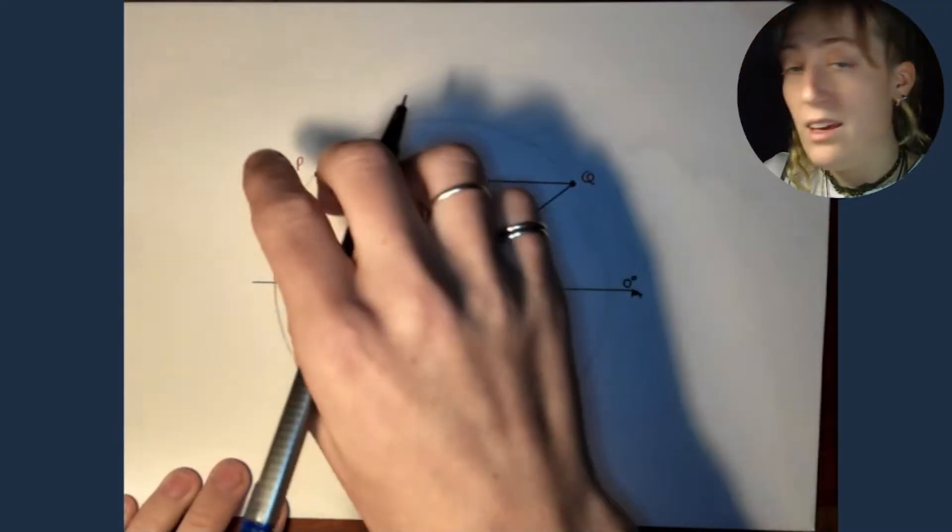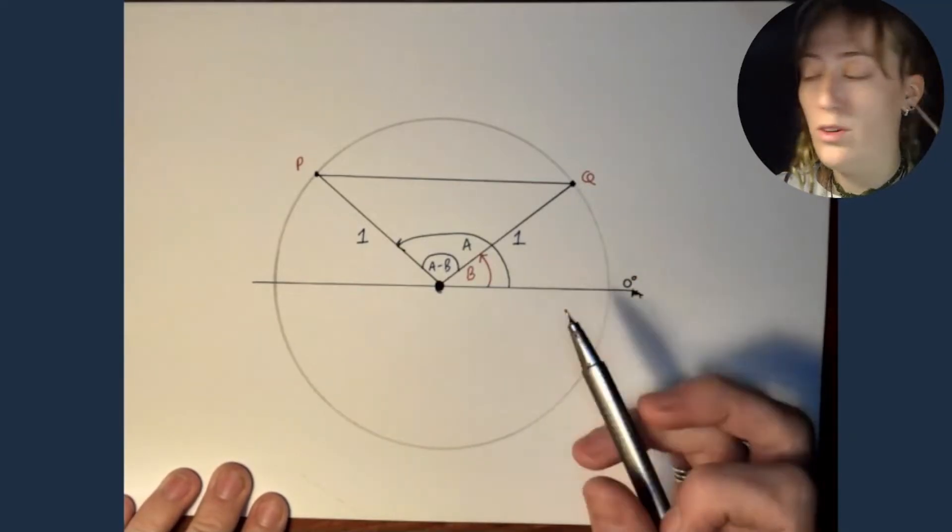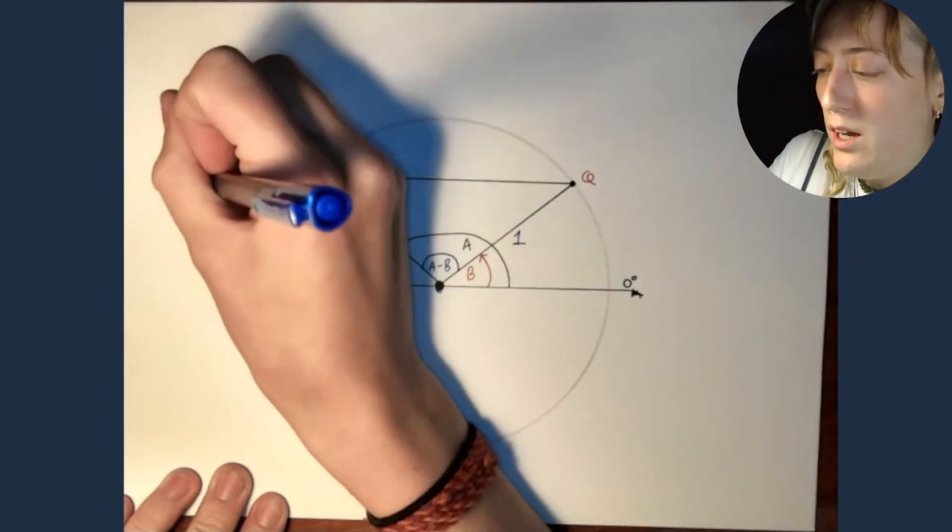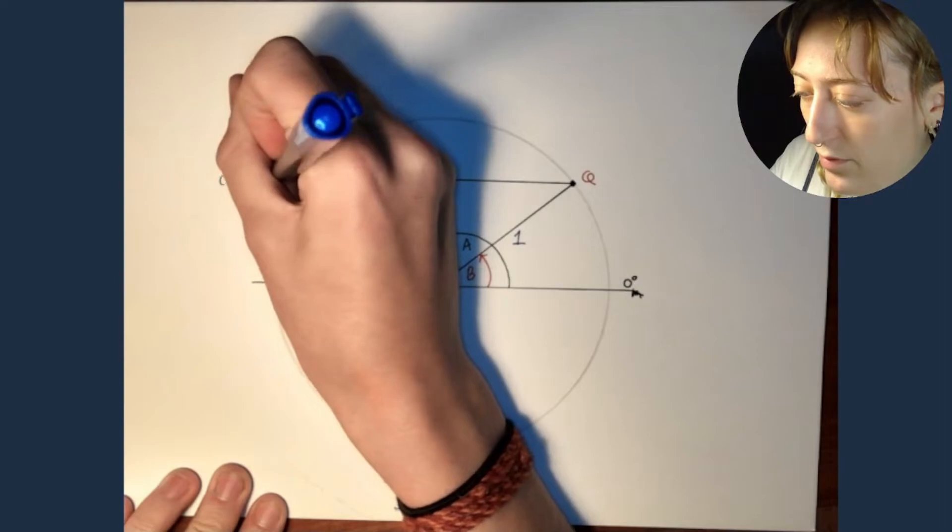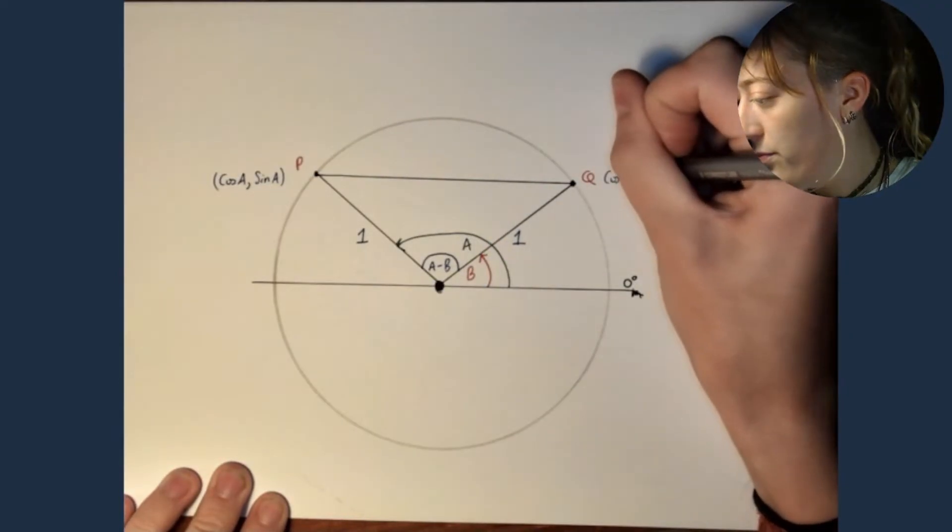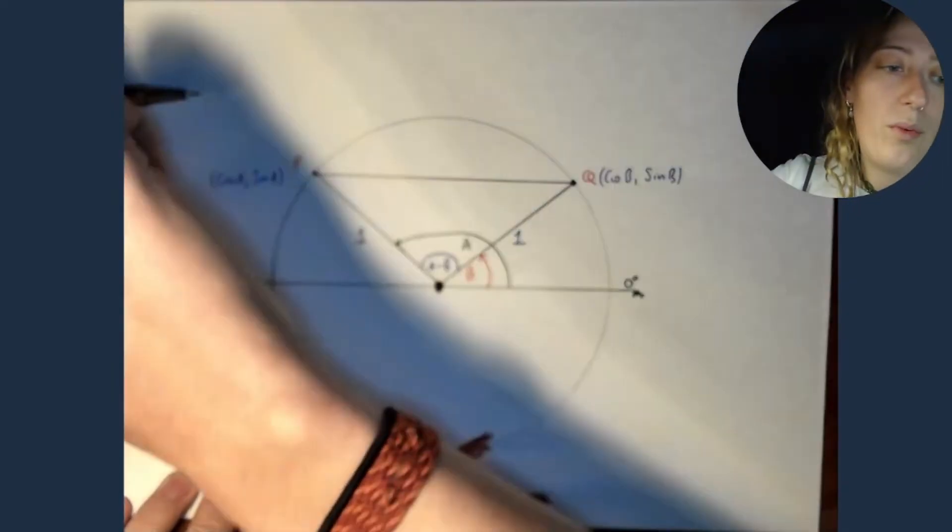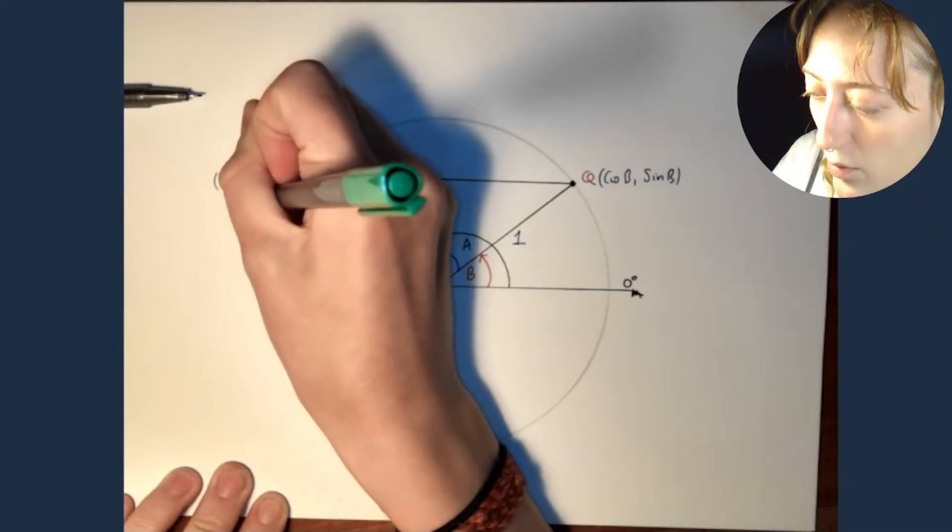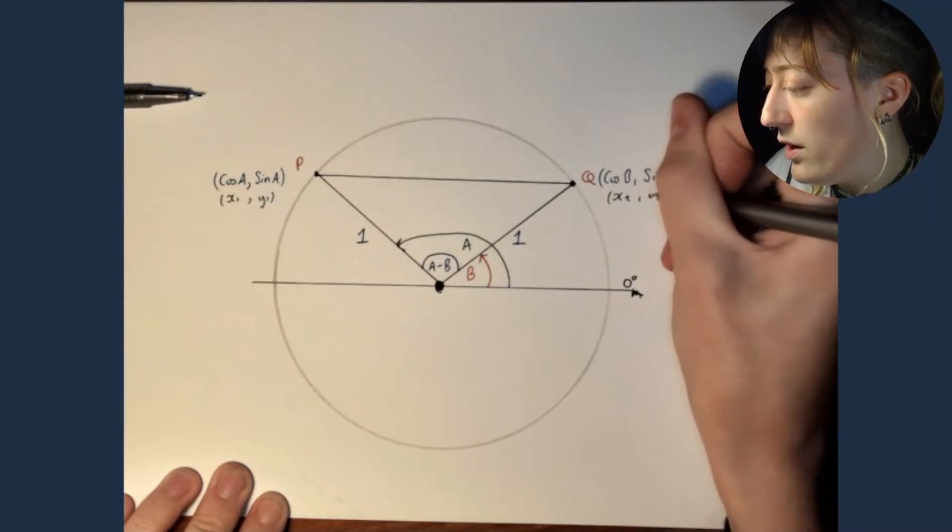Now, the point P has the coordinates. So if we're looking at this as coordinates, we're looking at this as the point zero, zero, the origin. Then the point P would have the coordinates cos of A, sine of A. And the point Q would have the coordinates cos of B, sine of B. We're now going to label these. This is x1, y1. This is x2, y2. Now, that is your construction finished, guys.